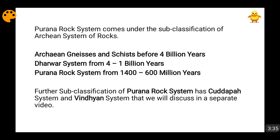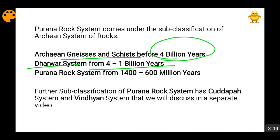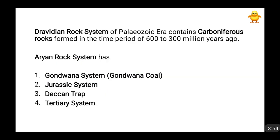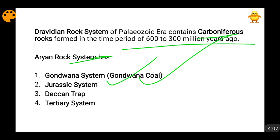You can see that Archean gneisses and schists were formed before 4 billion years ago. The Dharwar system formed in the time range of 4 to 1 billion years ago. The Purana rock system formed in the time period of 1400 to 600 million years ago. Its further classification is the Cudappa system and the Vindhyan system. The Vindhyan rock system formed in the time period of 600 to 300 million years ago. The Aryan rock system is further divided into the Gondwana system, the Jurassic system, the Deccan Trap, and the Tertiary system.